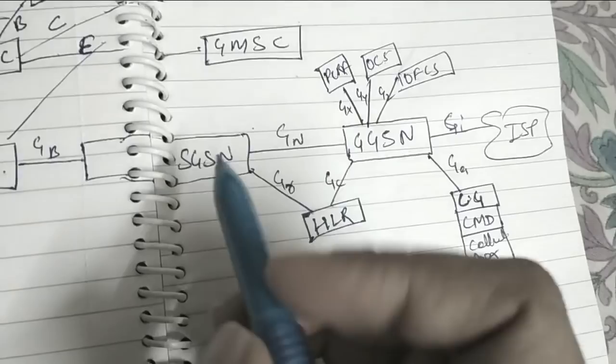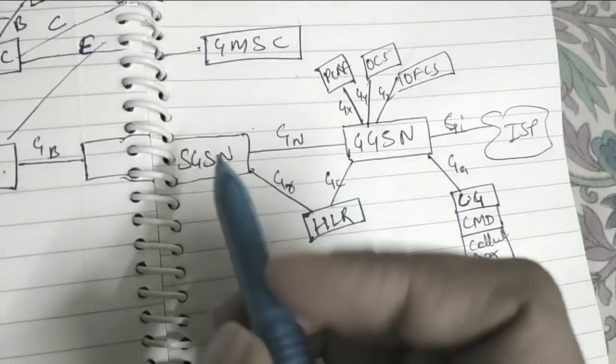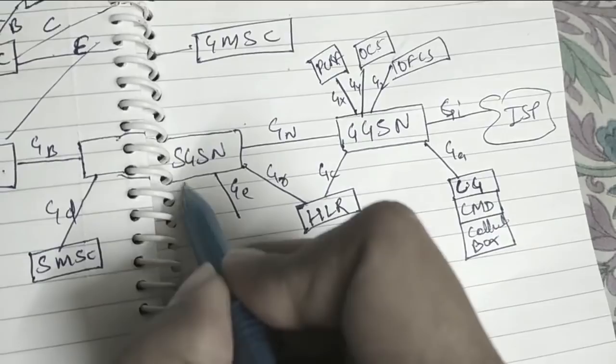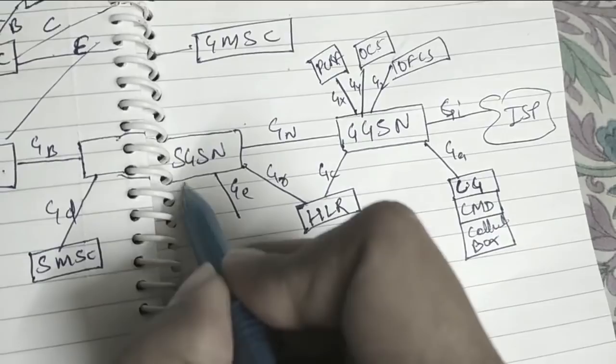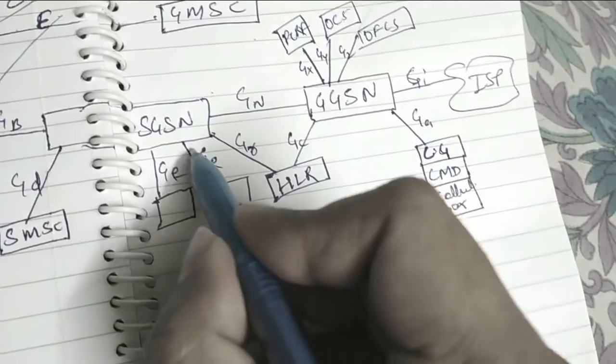Now let's talk about the SGSN part. SGSN is connected to the SMSC through GD Interface. GE Interface, GF Interface. You get different nodes are there. GE Interface for Service Control Protocol. GF is for EIR, Equipment Identification Register.